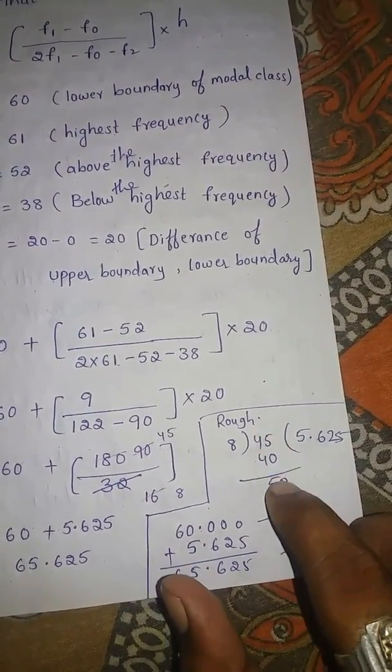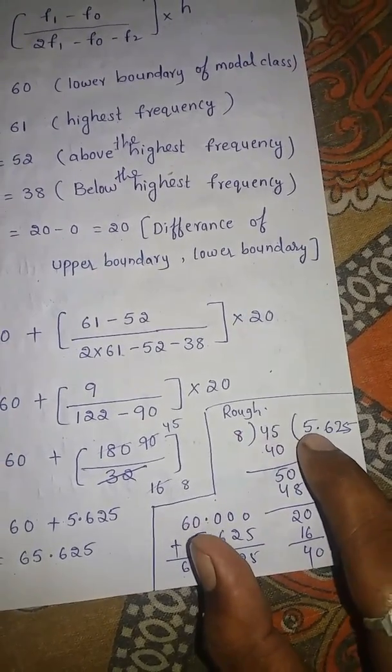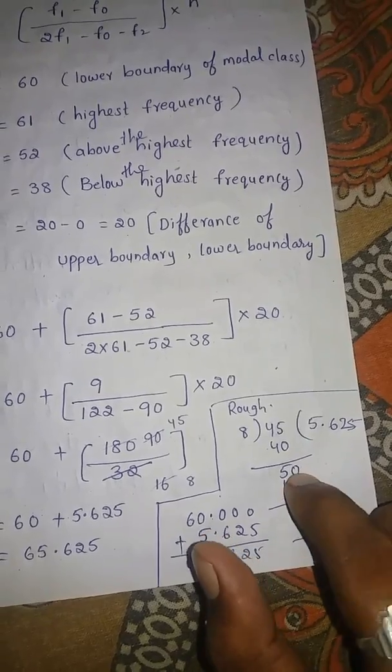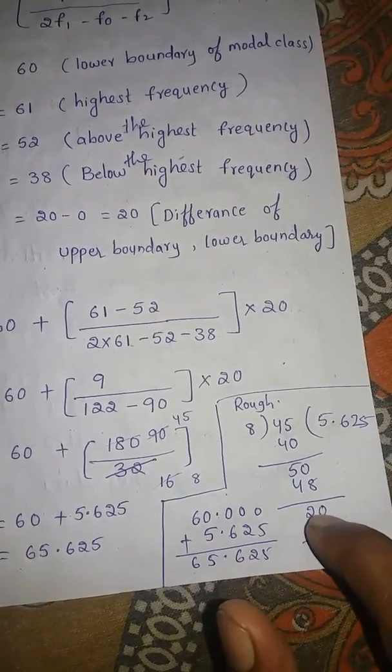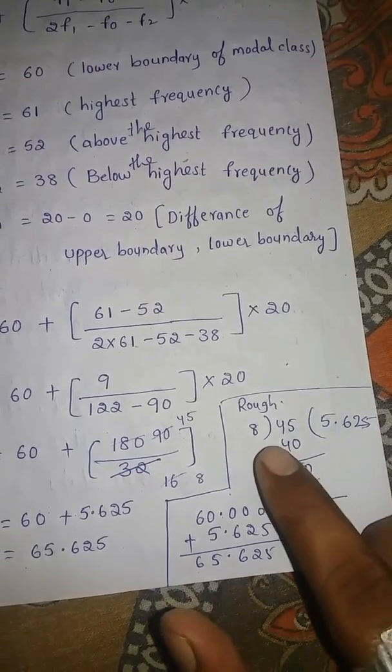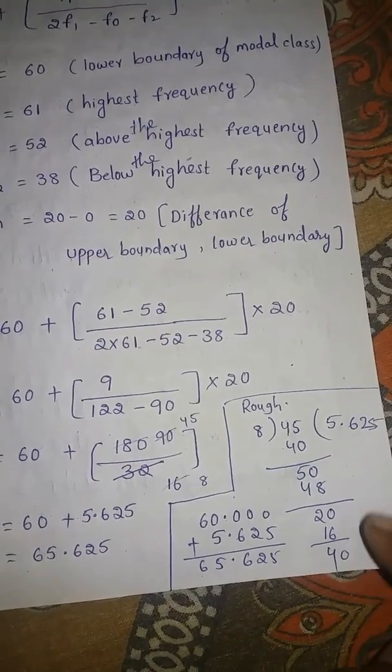Here we have to divide 45 with 8. 8 5 the 40, so here the remainder is 5. 5 it will not go with 8 table, so put a dot and keep 0, it will become 60. 8 6 the 48, 2 remains. Dot is there, keep one more 0, it will become 20. 8 2 the 16, so 4 remains. Dot is there, keep one more 0, it will become 40.